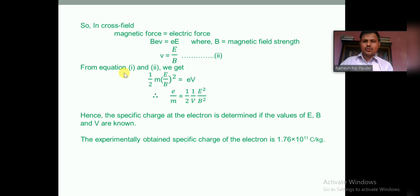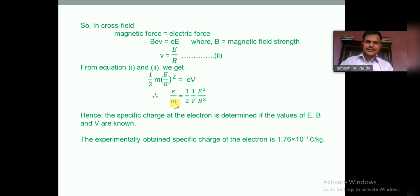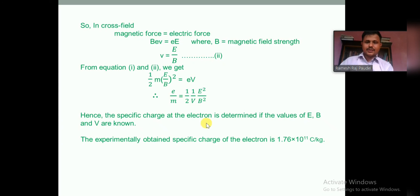Substituting the velocity v = E/B into the energy equation eV = ½mv², we get eV = ½m(E/B)². Rearranging the terms, the specific charge of an electron e/m equals E²/(2VB²). By knowing all the terms on the right-hand side of this equation, we can determine the specific charge of an electron. It was experimentally found that the specific charge of an electron is 1.76 × 10¹¹ coulombs per kilogram. This is the conclusion of the J.J. Thomson experiment.